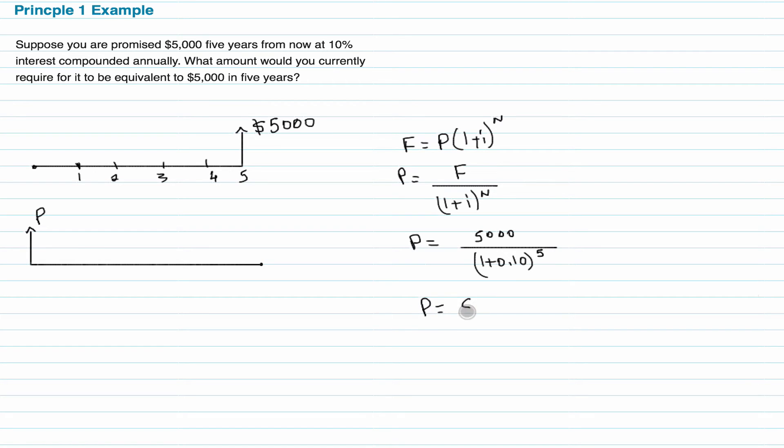P is equal to $3,104.61. So if you have $3,104.61 right now, this is the exact same thing as having $5,000 five years from now.